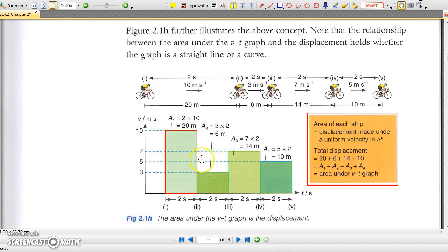Similarly, the displacement of the bicycle in the next consecutive 2 second intervals is equal to the areas of the green rectangles here.